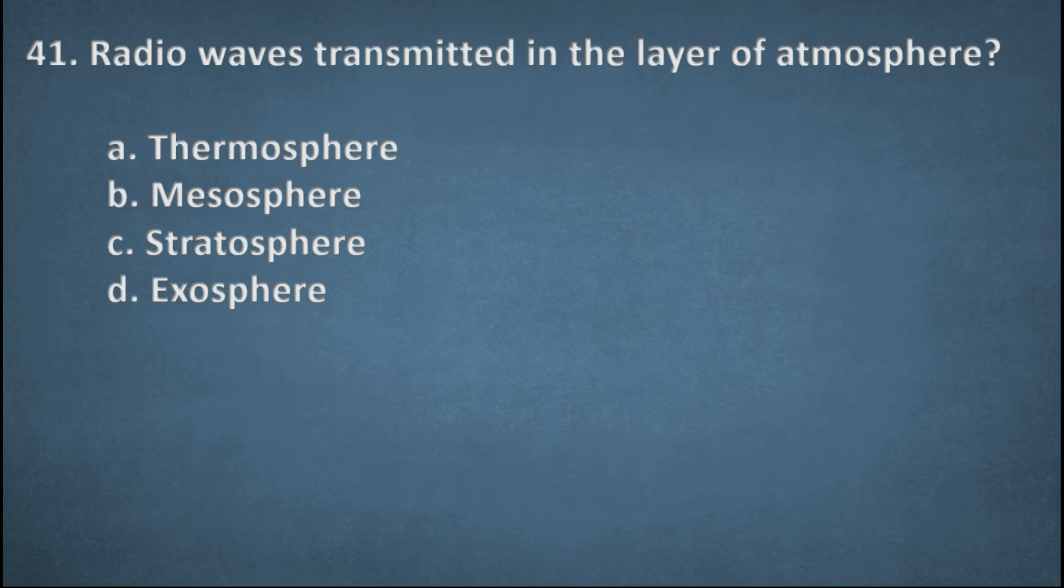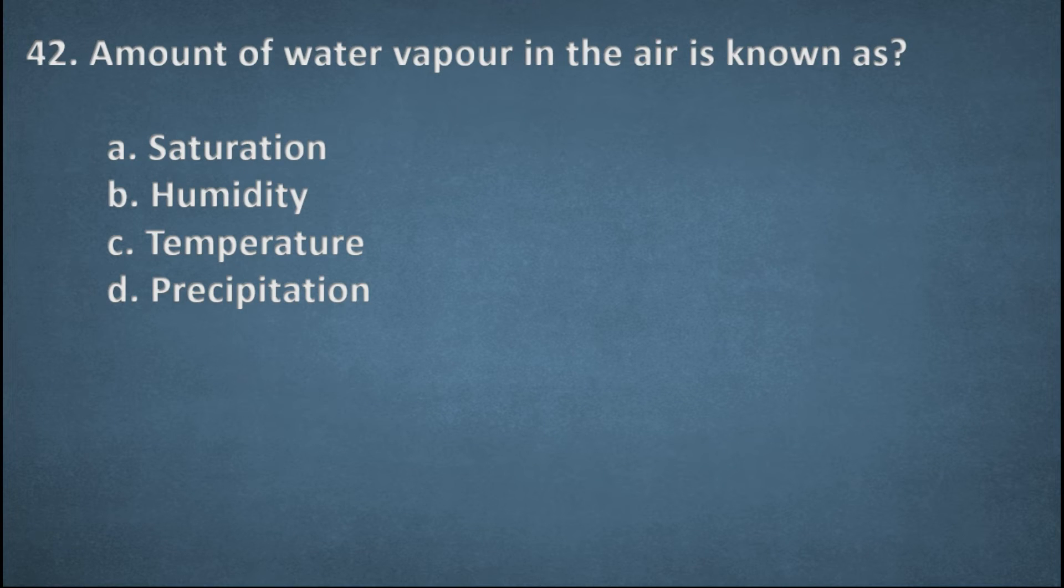Next one. Radio waves transmitted in the layer of atmosphere. Options: Thermosphere, Mesosphere, Stratosphere, Exosphere. The right option, A, Thermosphere. Next one. Amount of water vapor in the air is known as. Options: Saturation, Humidity, Temperature, Precipitation. The right answer, B, Humidity.